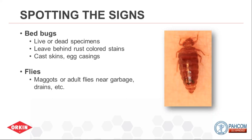The bed bug will expel some of that blood, leaving rust-colored stains — an easy sign to detect. You might not see the actual bug, but if you start seeing those signs, it means a patient may have come in with bed bugs and you may or may not still have them on your table or in your waiting room. That's a sign to contact your pest management provider for a more thorough inspection. For flies, you'll see maggots or adult flies near garbage or drains.